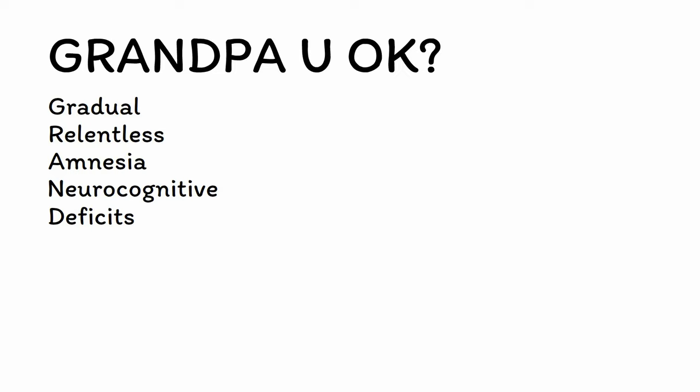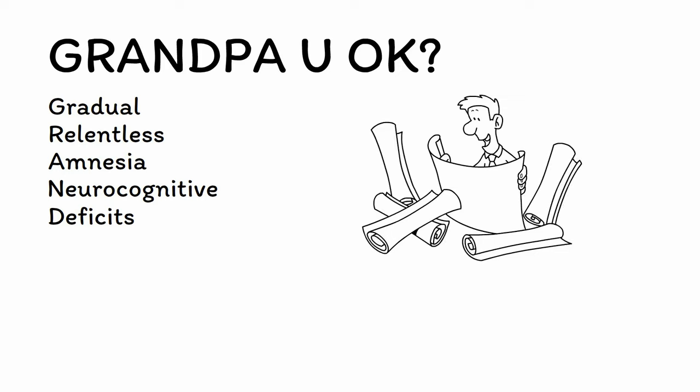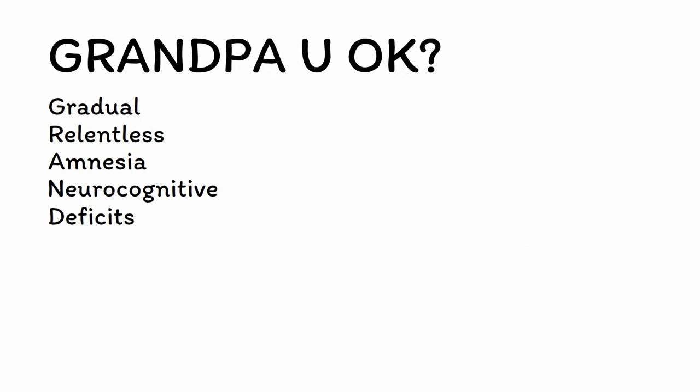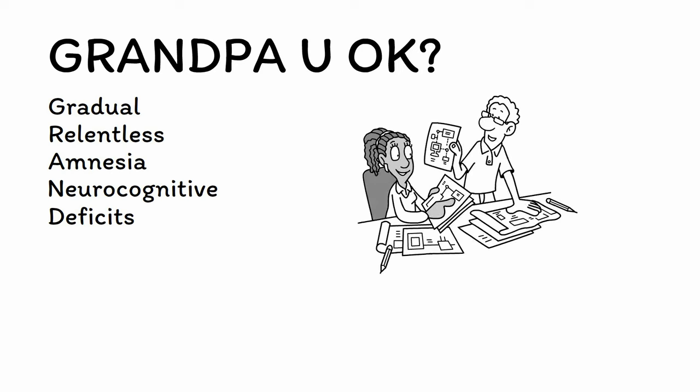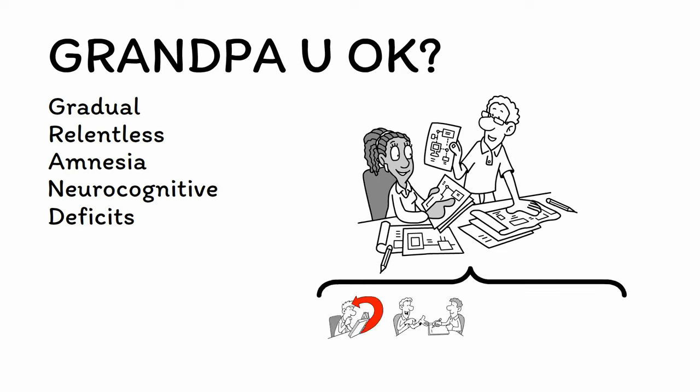Outside of the four A's, neurocognitive deficits can occur in a few other areas as well. Loss of visuospatial skills is common and tends to occur in a gradual manner. For example, one of the tasks on the MOCA involves asking the patient to draw a clock from memory, and the ability to successfully complete this task declines as dementia progresses. Executive functioning — or the ability to plan and execute an idea — is another domain that is often impacted, because it relies upon many other cognitive domains.